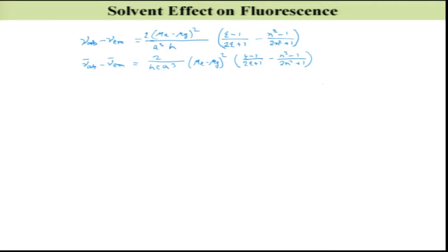If my absorption is here and emission is shifted to lower energy, that difference is the Stokes shift. However, as discussed earlier, Kasha's rule states that emission takes place from the lowest vibrational level of the first electronic excited state. According to the Frank-Condon principle, absorption and emission both contribute, meaning emission maxima are always shifted to lower energy than absorption even without any solvent effect.